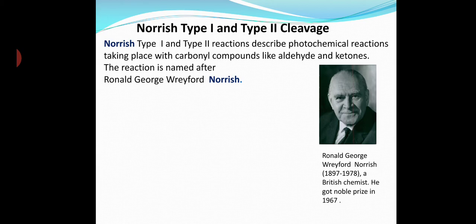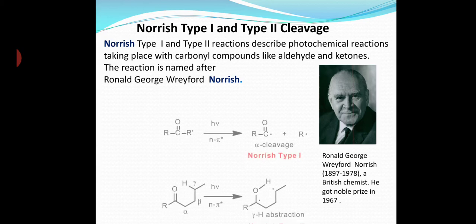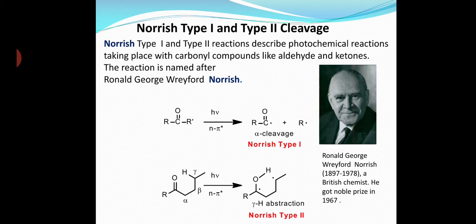Let's have a look at Norrish Type 1 and Type 2 reactions. When light falls on carbonyl compounds, the molecule gets excited and an n→π* electronic transition occurs. The electron easily goes to the triplet excited state, and in this state the alpha bond adjacent to the carbonyl group cleaves. This is known as Norrish Type 1 reaction.